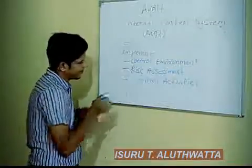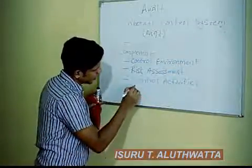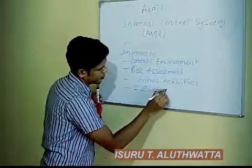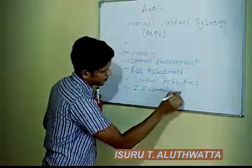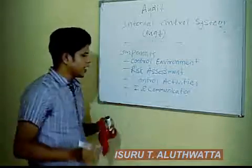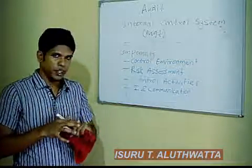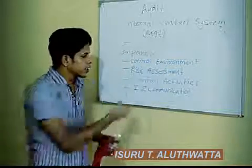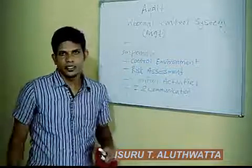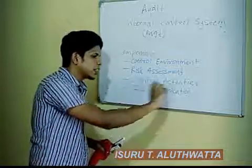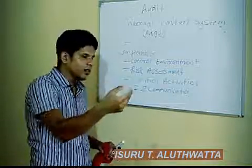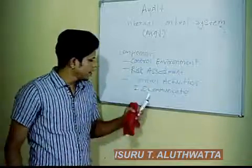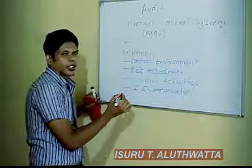The next component is information and communication. Information and communication means that when you are designing the internal control system, the people who are controlling and designing the internal controls should be communicated to. Management should communicate to individuals at lower positions, and information and communication channels will be designed accordingly.